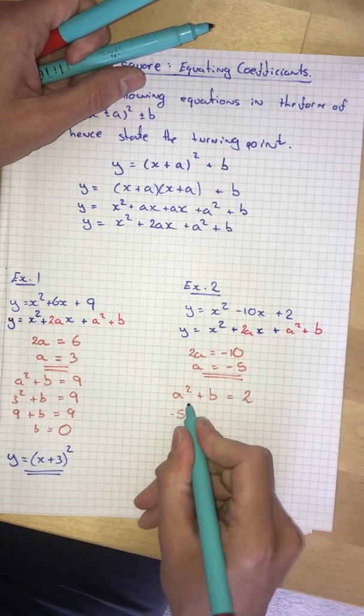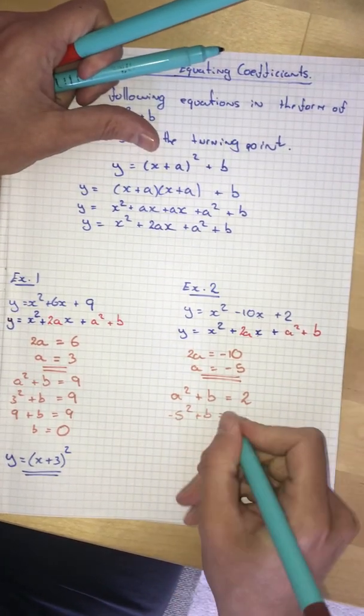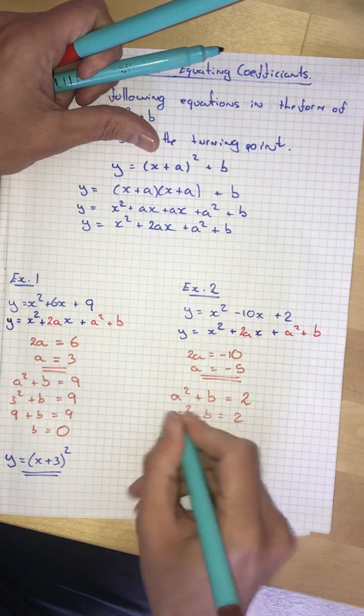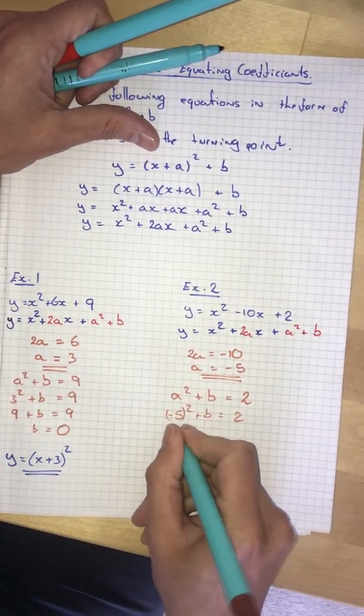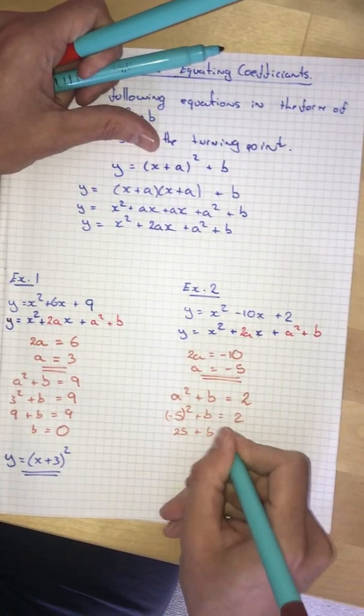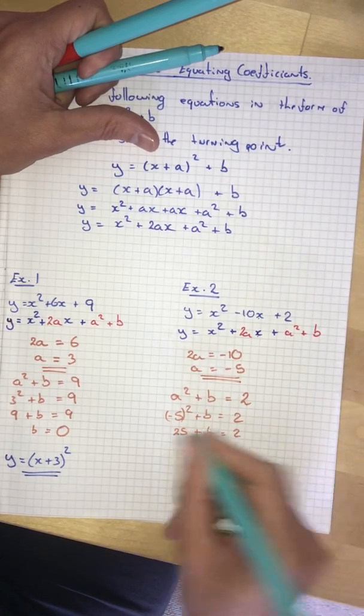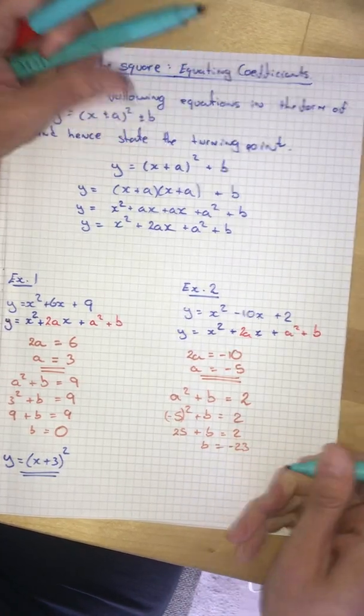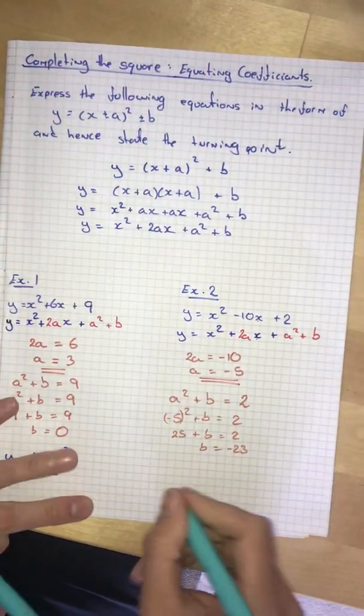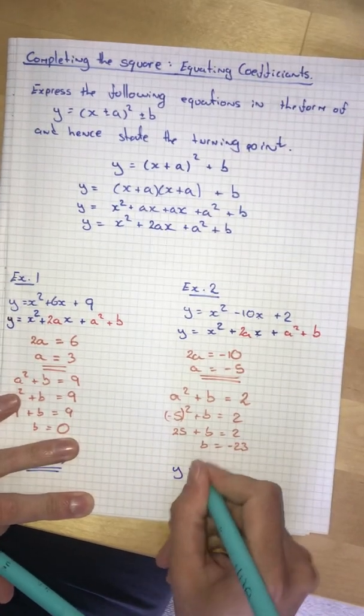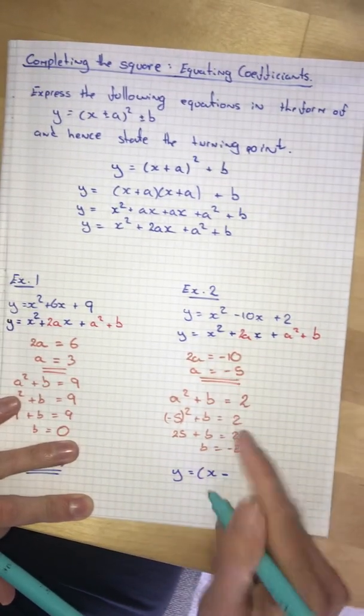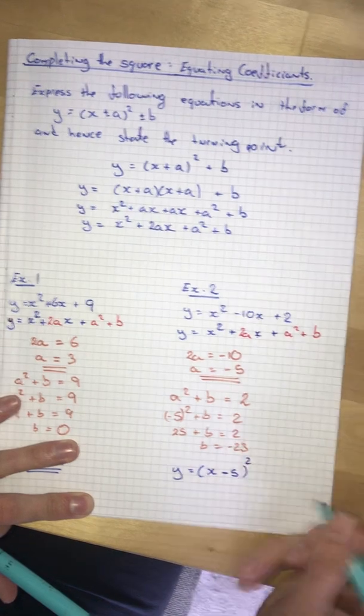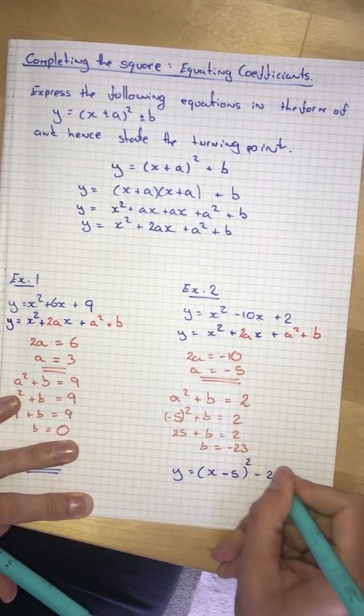And now a squared plus b equals 2. So then negative 5 squared plus b equals 2. Negative 5 squared is 25. So b equals 2 minus 25, which is negative 23.